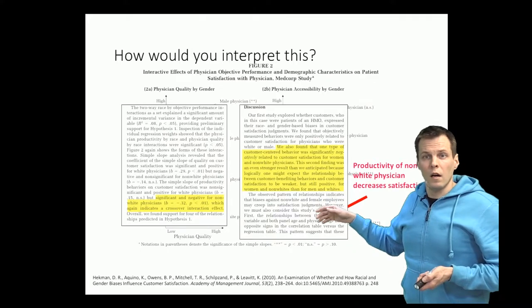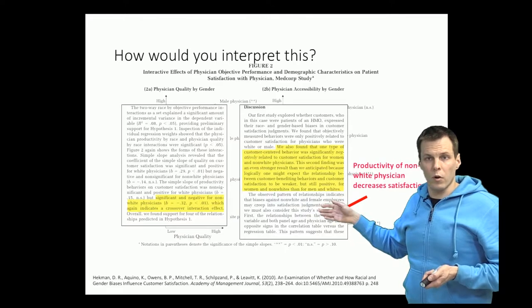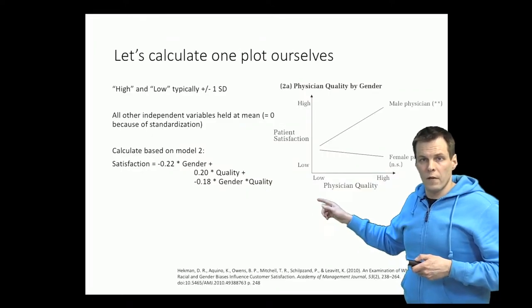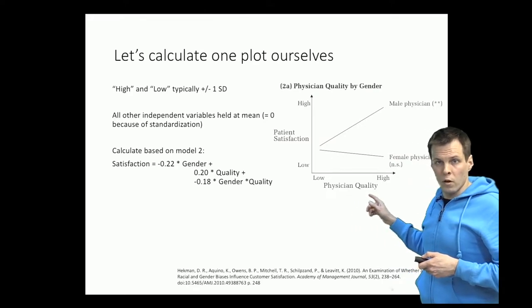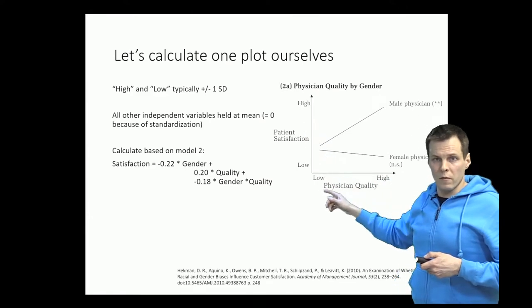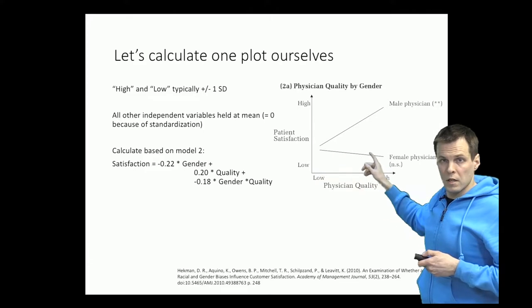To understand what these plots quantify, let's calculate one plot ourselves. So let's do the plot for physician quality, the first of the four, and patient satisfaction. The relationship between physician quality and patient satisfaction depends on the physician gender.